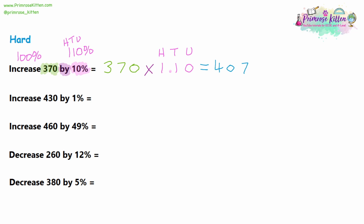Question two: we have 430, increasing by 1%. It's not just 1% — because we're increasing, we have 100% plus 1% = 101%. Looking at hundreds, tens, and units: we have 1 hundred, 0 tens, and 1 unit. So on our calculator, we type in 430 multiplied by 1.01, giving us an answer of 434.3. We started with 430, and it's a 1% increase, so it's only slightly bigger — 434.3 makes sense.